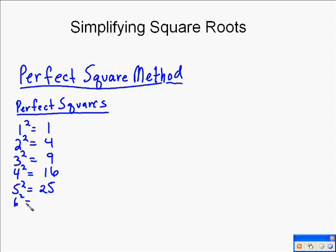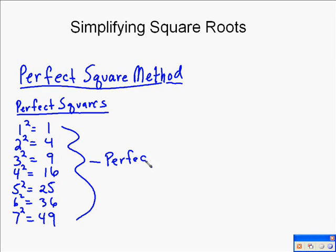So, first thing we need to do is we need to think about what are our perfect squares. Well, the perfect squares are all the numbers that are the result of squaring a number. One is a perfect square because one squared equals one. Four is a perfect square because two squared equals four. And so, you can see that I've listed those out: one, four, nine, sixteen, twenty-five, thirty-six, forty-nine. Those are all perfect squares.